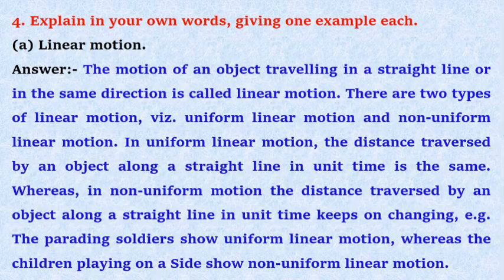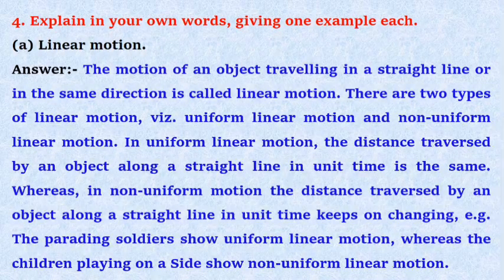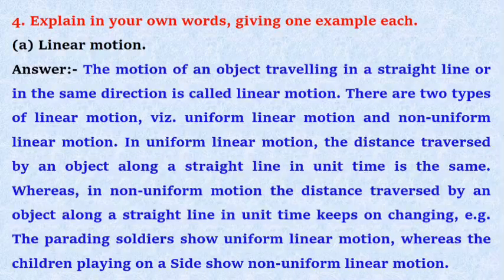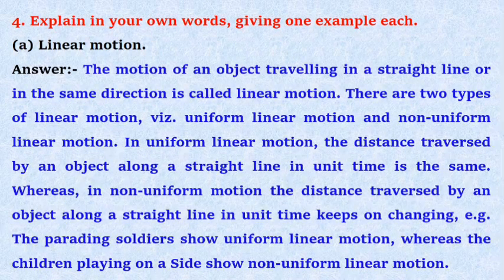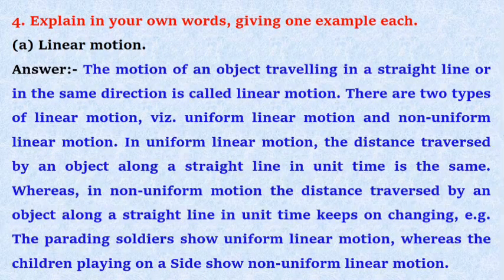In uniform linear motion, the distance traversed by an object along a straight line in unit time is the same. Whereas in non-uniform linear motion, the distance traversed by an object along a straight line in unit time keeps on changing.